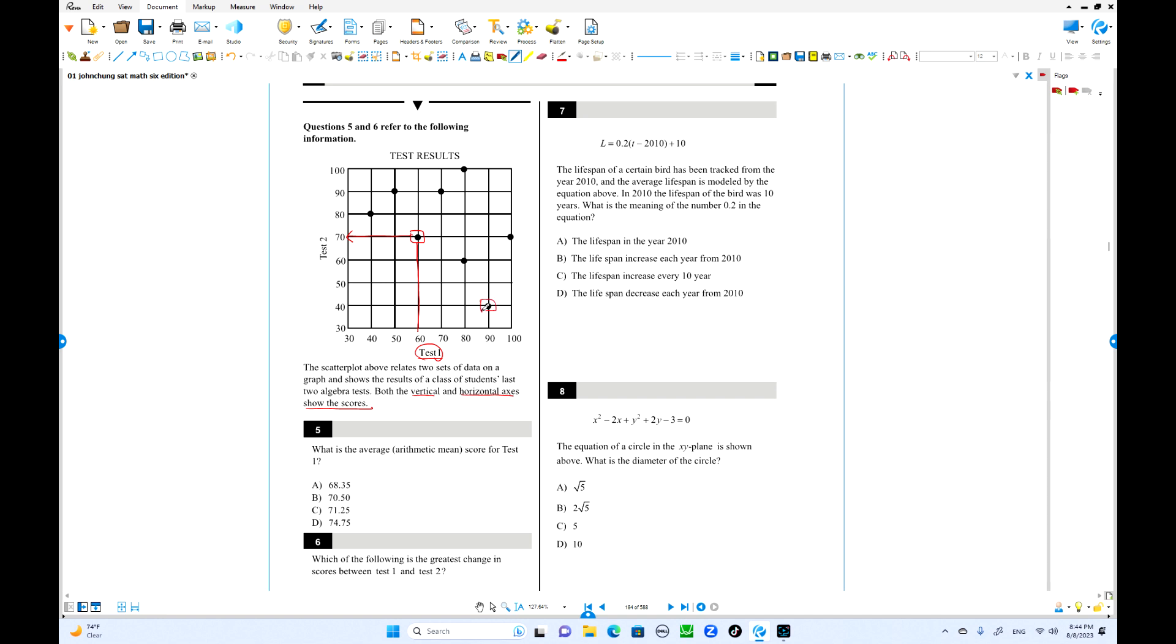For example, this guy has a score 60 on test one and the score 70 on test two. So this point, this scatter plot has what? Two information. One more of it. This guy says what is that? 90 on test one and the 40 point on test two. You understand this one. Now try number five. What is the average score for test one? So average speed is what? Total score over total number of data.